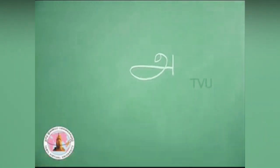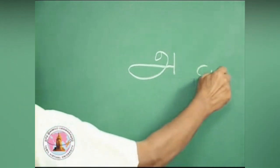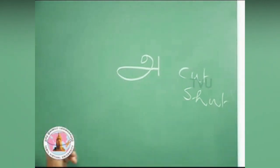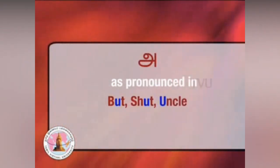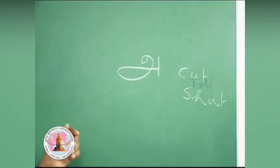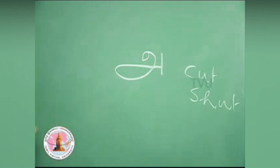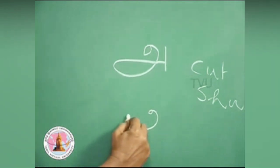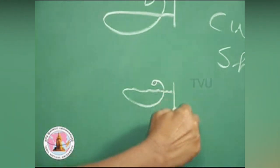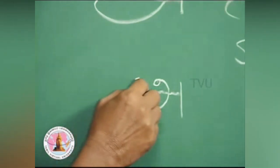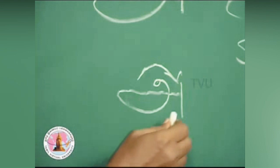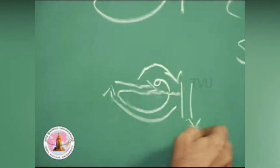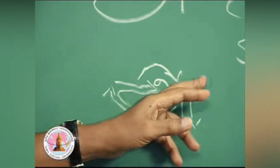This is A, as you have the vowel sound in 'cut' or 'shut.' This is A and it is written like this. You start with a circle, go down, take a bend, stretch it, and then end it with a vertical line from top to bottom. Once again we will see how to write — it proceeds like this, goes up, then stretches itself and ends with a vertical line top to bottom.